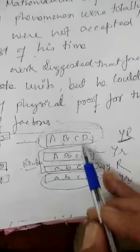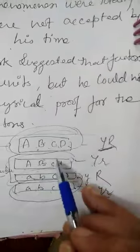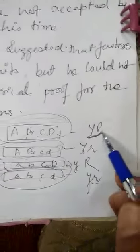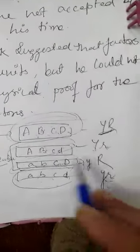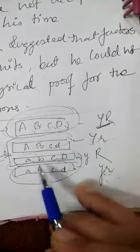That way, four different types of gametes will be formed. You can compare these gametes with Mendel's dihybrid cross gametes, because Mendel's four gametes of the dihybrid cross are only possible when there is complete crossing over. You can compare the parental combination with gametes: A B C D, small y r, capital Y small r, and small y capital R.